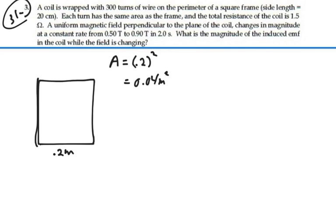And we don't have just one coil. We have a whole bunch of them on this frame. So the number of turns that we have is 300.